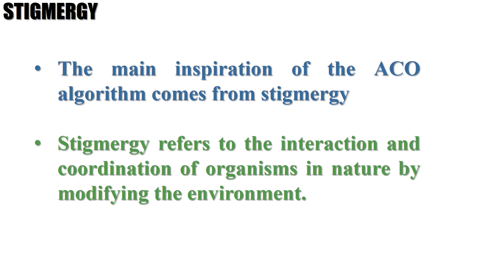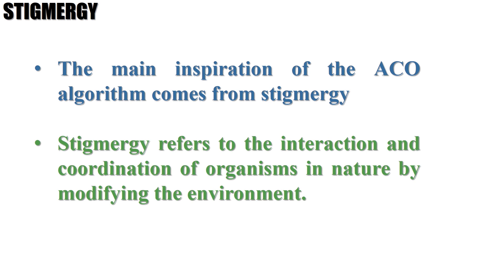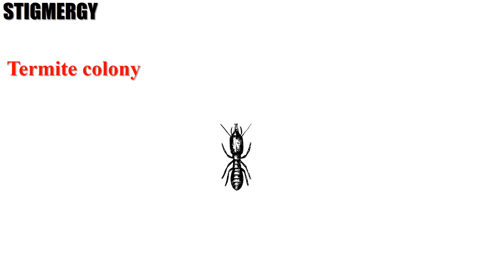The main inspiration of the ACO algorithm comes from stigmergy in an ant colony. In stigmergy, the trace of an action done by an organism stimulates subsequent actions by the same or other organisms. For instance, in a termite colony, one termite may roll a ball of mud and leave it next to a hole. Another termite identifies the mud without communicating with the first termite and uses it to fix the hole. In nature, such behaviors result in complex and decentralized intelligence without planning and direct communication.